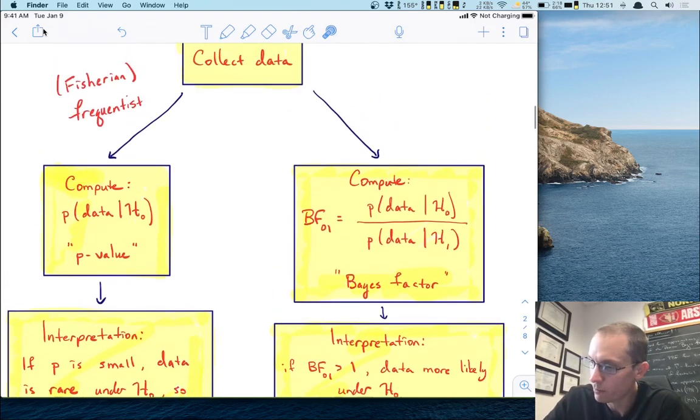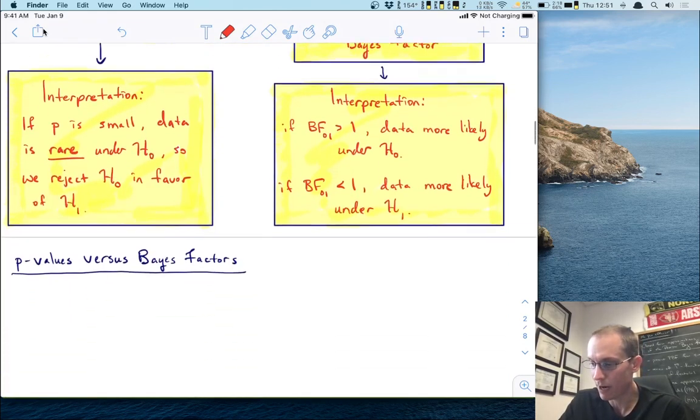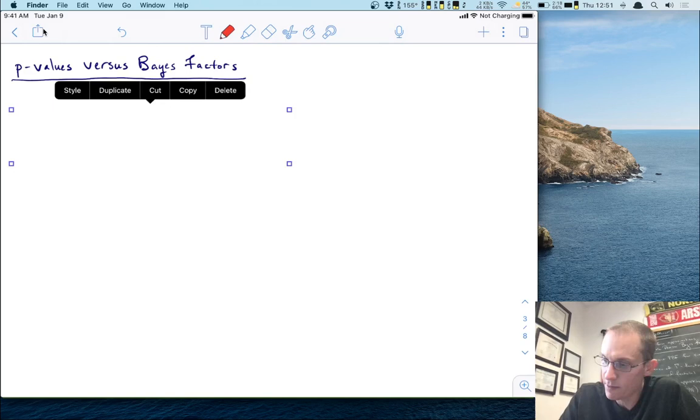So of course, as you probably already know, this is what we call the Bayesian approach. So that's what we're going to learn about today is the Bayesian approach. How do you do Bayesian hypothesis testing? But before we get into that, let's really list out some of the differences that we can see about p values versus Bayes factors.